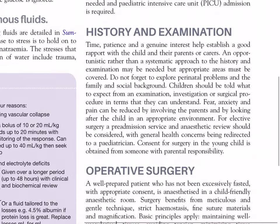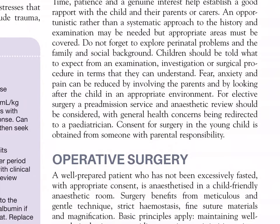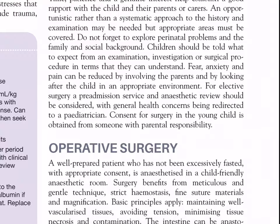History and examination. Time, patience and a genuine interest help establish good rapport with the child and their parents or carers. An opportunistic rather than systematic approach to history and examination may be needed, but appropriate areas must be covered. Do not forget to explore perinatal problems and family and social background. Children should be told what to expect from an examination, investigation or surgical procedure in terms they can understand. Fear, anxiety and pain can be reduced by involving the parents and by looking after the child in an appropriate environment. For elective surgery, a pre-admission service and anaesthetic review should be considered. Consent for surgery in the young child is obtained from someone with parental responsibility.